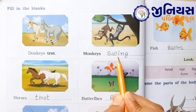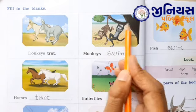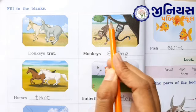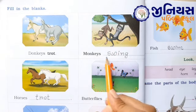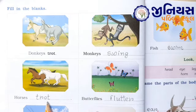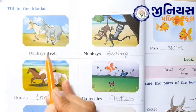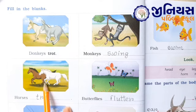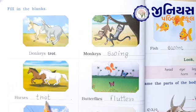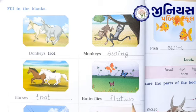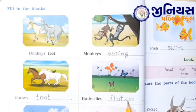Monkeys swing — जो monkey होते हैं, वो पेड़ों की डाली पर swing करते हैं, इधर उधर लटकते हैं, उसे कहते हैं swing. Horse is trot — जो horse दौड़ते हैं तब उसकी पैरों में से जो आवाज़ आती है, डब डब डब डब, उसे कहते हैं trot. Butterflies flutter — जो butterfly होते हैं, वो उड़ते हैं, उसे कहते हैं flutter.